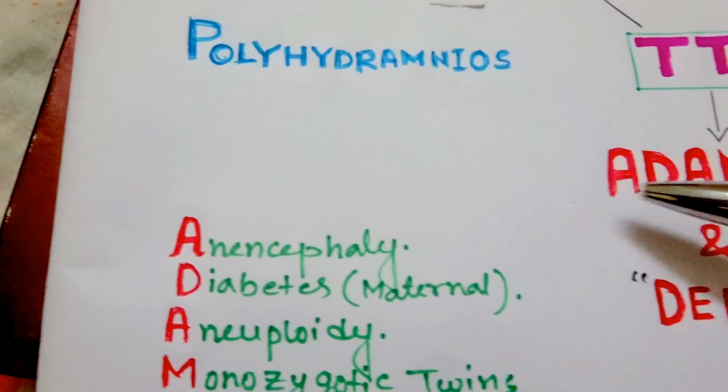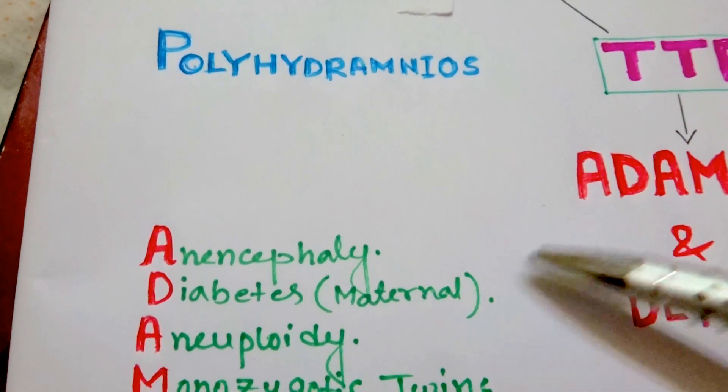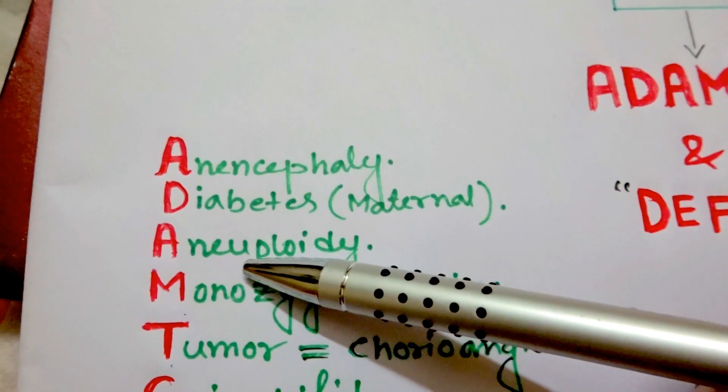So now for A it is anencephaly. For D it is diabetes, that is maternal diabetes. For another A it is aneuploidy.